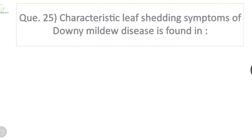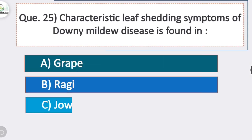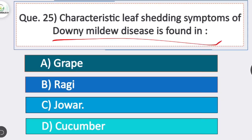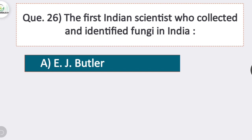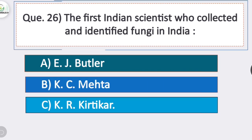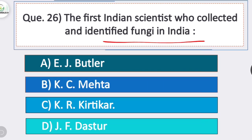Question 25: the characteristic leaf sheaf symptom of downy mildew disease is found in? Option C is correct — jowar. Question 26: the first Indian scientist who collected and identified fungi in India is? Option C is correct — K.R. Kirtikar.